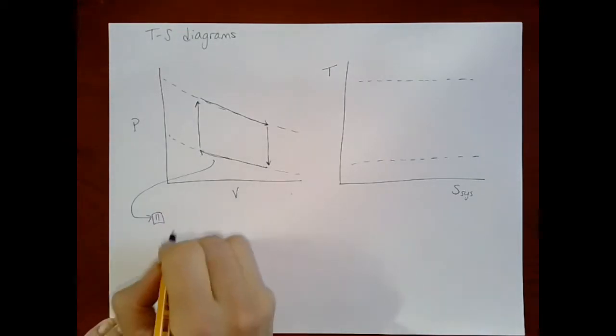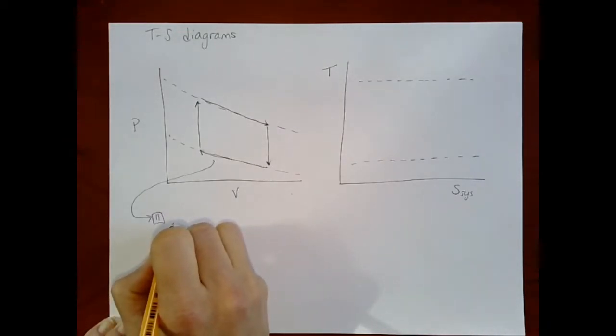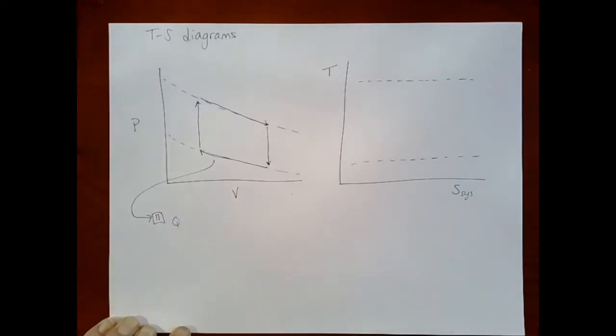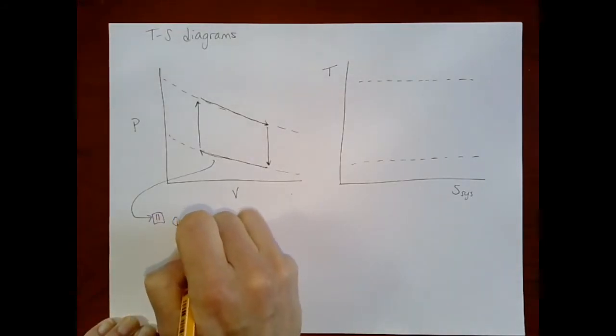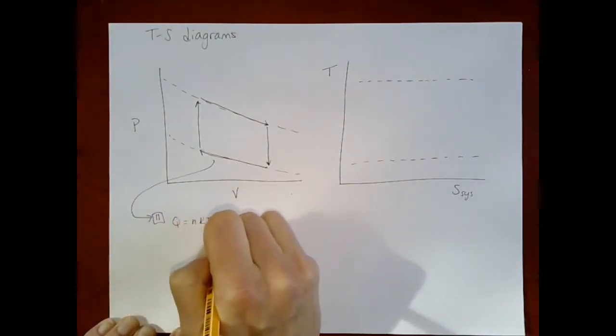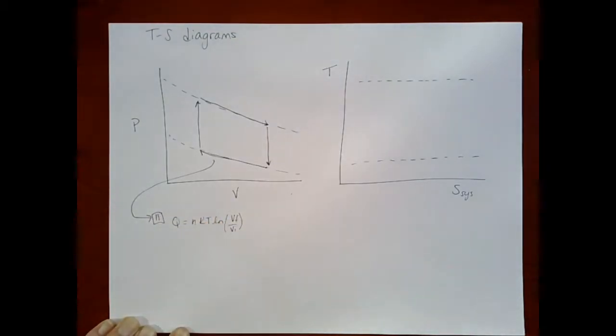Alright, unpausing. I'm going to start by reminding you of our equation for heat for an isothermal process, isothermal and reversible process. We got to this equation because assuming reversibility, we got to this equation for work. And then because it's isothermal, the internal energy isn't changing, and so the amount of heat transferred is equal to the amount of work done.